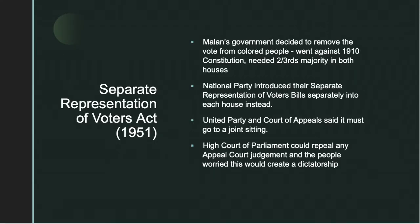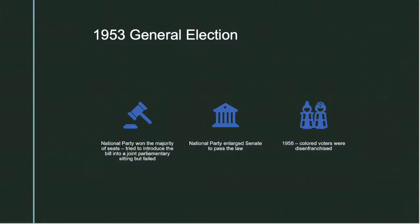The Separate Representation of Voters Act: the National Party decided to remove the vote from colored people, which went against the 1910 constitution and needed a two-thirds majority in both houses. They introduced the bill separately into each house instead. The United Party and Court of Appeals said it must go to a joint sitting. The High Court of Parliament could repeal any appeal court judgment, and people worried this would create a dictatorship. In the 1953 general election, the National Party won the majority of seats and tried to introduce the bill into a joint parliamentary sitting but failed. The National Party then enlarged the Senate to pass the law, and in 1956, colored voters were disenfranchised.